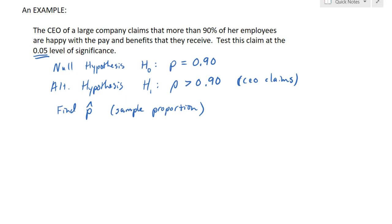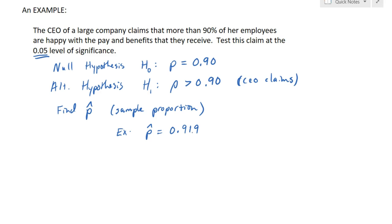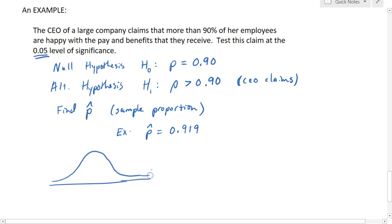The sample proportion is likely going to be different from 90%. Let's say our sample proportion comes out to be 0.919. We've done a simple random sample of employees and found that 91.9% are happy with their pay and benefits. Our job is to figure out if this is statistically higher than 90% or if we just got a higher number due to random chance. We compute a test statistic using technology, and based on that, we find the p-value. Since this is a right-tailed test using the normal distribution, the p-value is the area to the right of our z statistic.